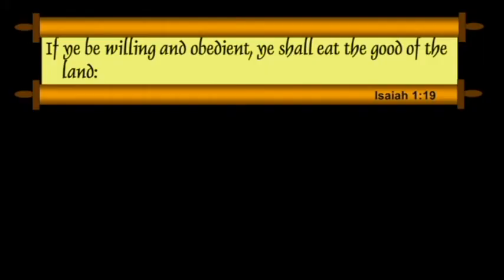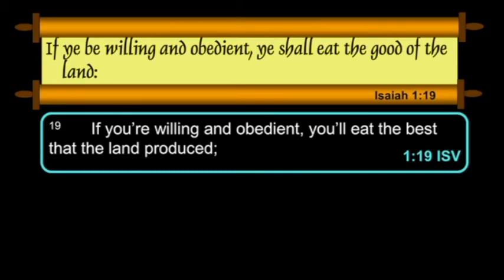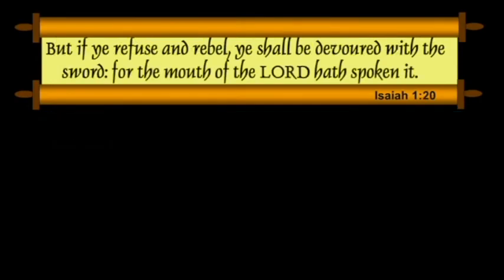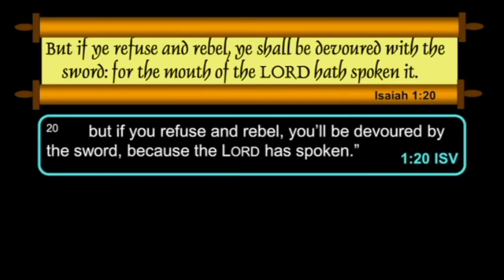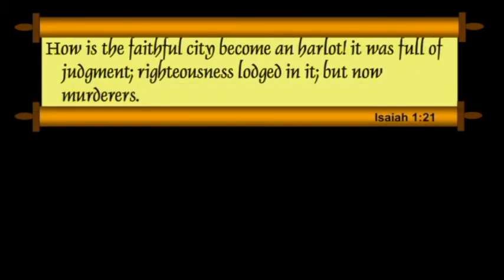Verse 19: "If ye be willing and obedient, ye shall eat the good of the land." The ISV: "If you are willing and obedient, you will eat the best of the land produced." Verse 20: "But if ye refuse and rebel, ye shall be devoured with a sword, for the mouth of the Lord hath spoken it." Or in the ISV: "If ye refuse and rebel, ye shall be devoured by the sword, because the Lord hath spoken."